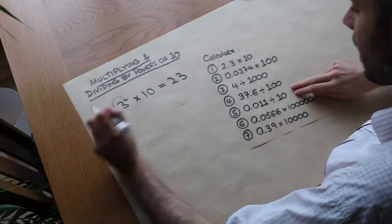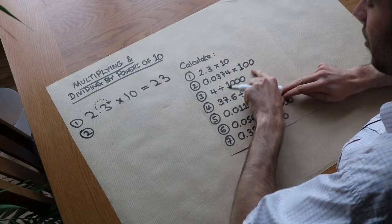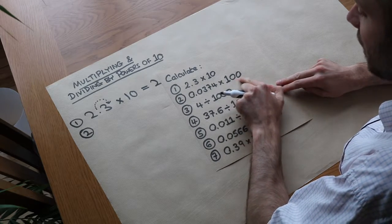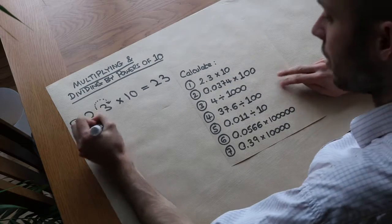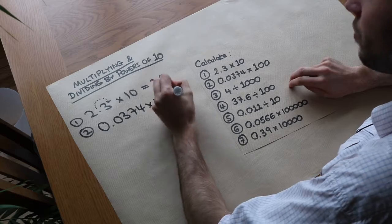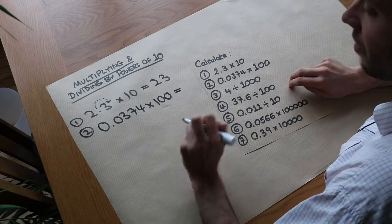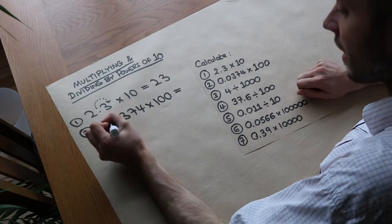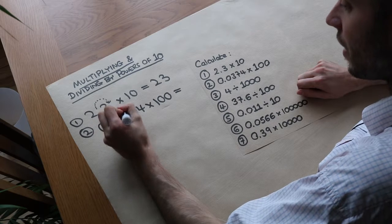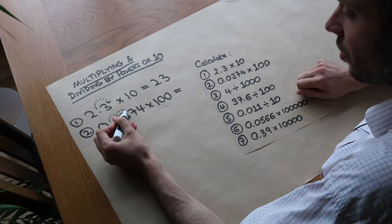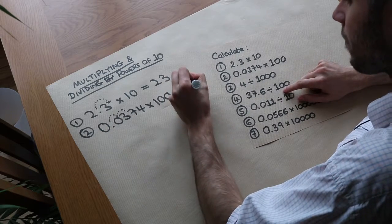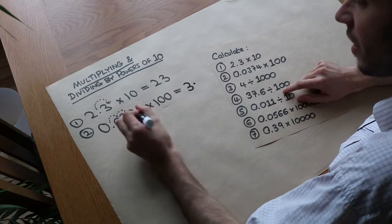With the next one, we're multiplying by 100. The number of zeros tells you how many places the decimal point moves. 100 has two zeros, so it shifts two places to the right — one movement, two movements — so it's now between the 3 and the 7, giving 3.74.